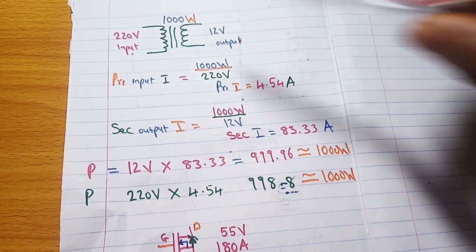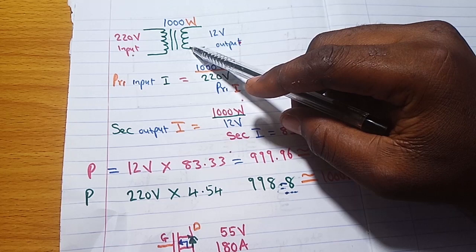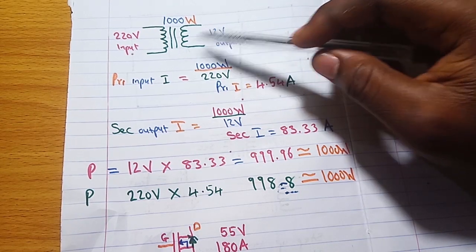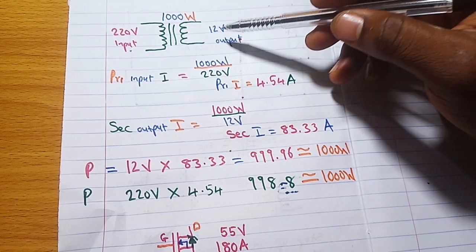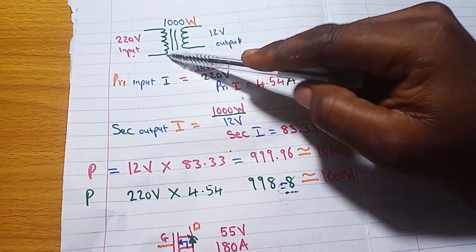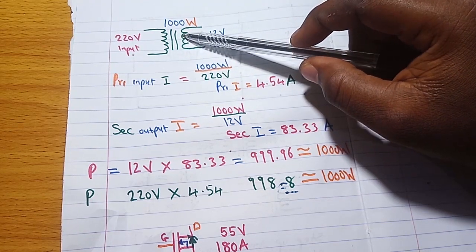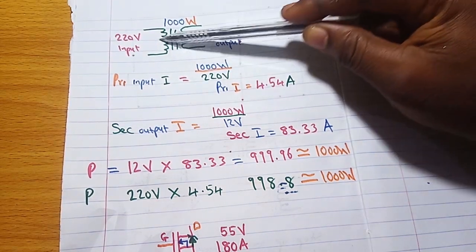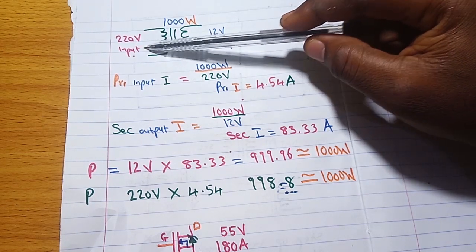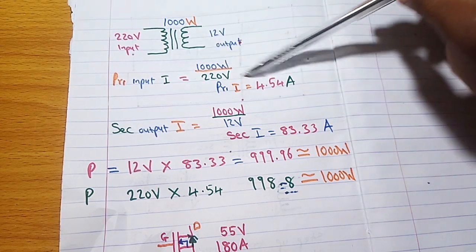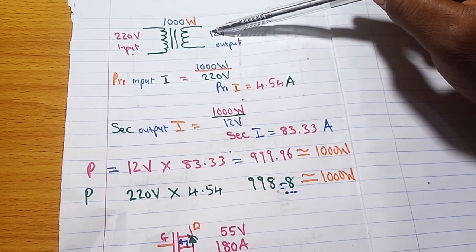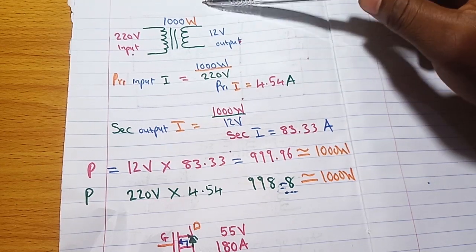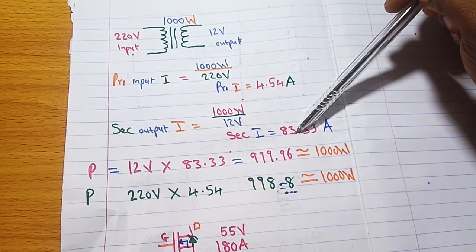Since this is a step-down transformer and we apply 220 volts to be stepped down to 12 volts, where does the remaining voltage go? The remaining voltage is not thrown away — energy cannot be destroyed. It is converted to amperage, which is why the secondary side has a higher current. The input side carries 4.54 amps while the secondary carries 83.33 amps — the excess voltage is converted to current. That is how a transformer works.